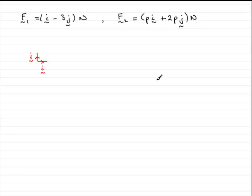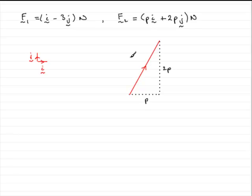If I was to sketch F2 as a vector, we go say p units — let's just put on a dotted line, let's imagine that's p units. Then 2p units would be upwards in the j direction. So we've got that this is p and this is 2p, and the vector F2 would go from here to here going in that direction. That would be the vector F2.